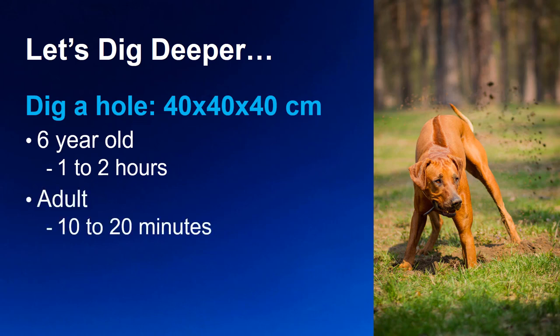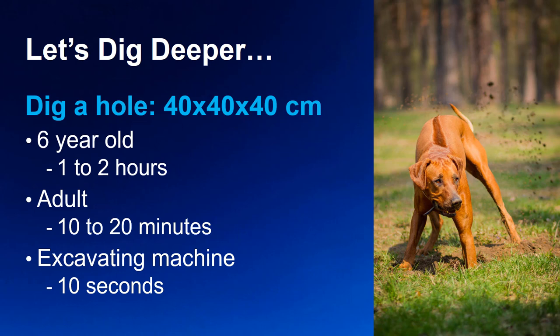If employing a six-year-old were not against the law, we would probably get a result in the region of one to two hours for that child to dig the hole — not ideal for 50 or 60 holes. A better choice would be an adult, who could complete each hole in about 10 to 20 minutes. But for hundreds of holes, a modern excavating machine completing the task in only about 10 seconds would likely be the best choice. Also, don't forget the skills of your resources — a terrier would be better for digging than a hunting dog.